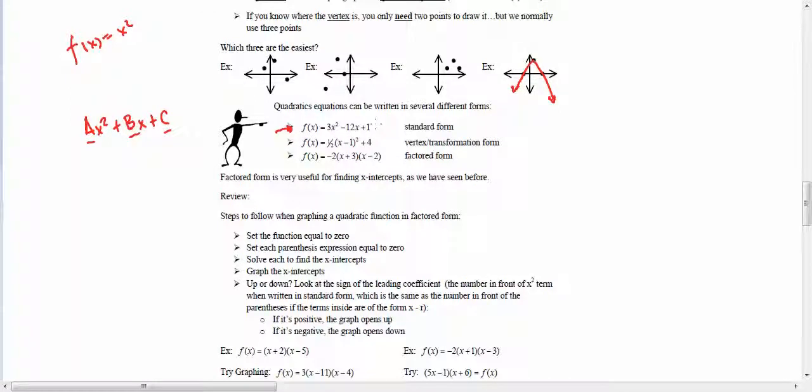We also have the vertex form, and we talked a lot about the vertex form when we're talking about graphing. This would be a parabola that is being shifted to the right by one unit. It's also being pushed up by four units, and it's a flattened out horizontally or vertically compressed parabola.